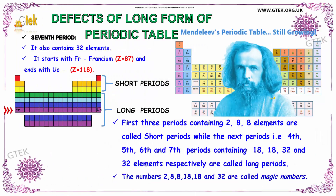This is considered as Mendeleev's periodic table, and here is the seventh period. It contains 32 elements. It starts with francium, whose atomic number is 87, and ends with element 118. The top three periods are considered short periods and the bottom three are considered long periods.